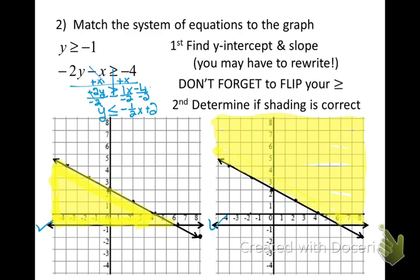Now I can see that my y-intercept is 2, I have a negative slope of ½, and I'm shading below. Starting at 2, going down 1 over 2 and shading below — this matches the first graph. So this is the graph of this system of inequalities.